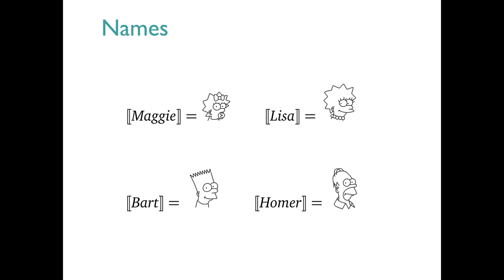Let's start with proper names. For us, these directly refer. These expressions use the double brackets as the semantic interpretation function, so the top left one can be read as the meaning of the proper name Maggie is the entity Maggie. Very straightforward.